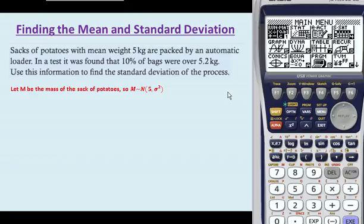Now, what we know is that the probability of M, the mass of the sack of potatoes, being bigger than 5.2 is 10%, which is 0.1.